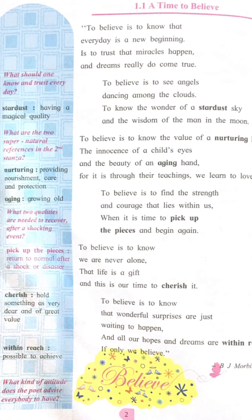Stanza three: 'To believe is to know the value of a nurturing heart, the innocence of a child's eyes and the beauty of an aging hand, for it is through their teachings we learn to love.' Nurturing means caring. The people who nurture us are our parents, teachers, and guardians. The poet tells us we should believe and value everything they tell us, just like an innocent child believes in everything. We should also listen to elders because they have more experience and wisdom.